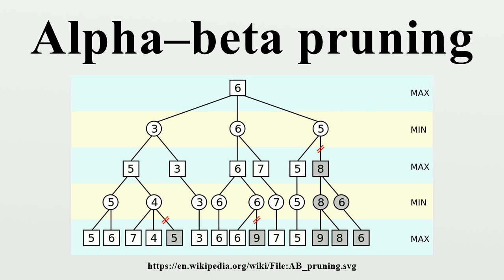The maximum number of leaf node positions evaluated is O(B^D), the same as a simple Minimax search. If the move ordering for the search is optimal, the number of leaf node positions evaluated is about O(B^(D/2)) for odd depth and O(B^(D/2)) for even depth. Where the ply of a search is even, the effective branching factor is reduced to its square root — equivalently, the search can go twice as deep with the same amount of computation. The explanation is that all the first player's moves must be studied to find the best one, but for each, only the best second player's move is needed to refute all but the first player's first move.